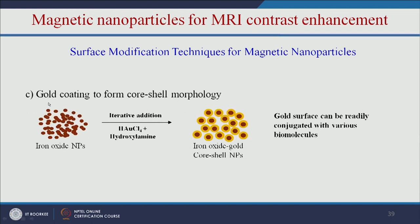Another example is gold coating on iron oxide nanoparticles to form a core-shell morphology. The iron oxide core provides MRI enhancement, and the gold surface can be readily conjugated with various biomolecules for multiple functions — both the iron oxide and gold contribute to MRI contrast enhancement.